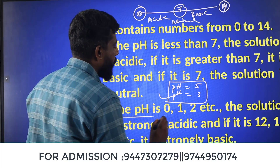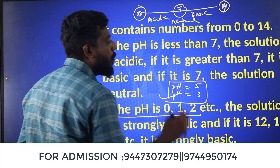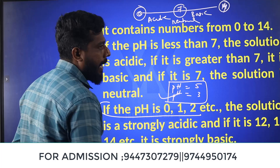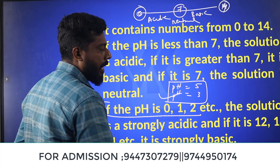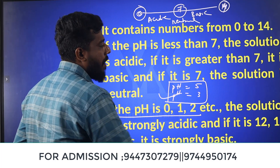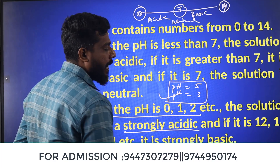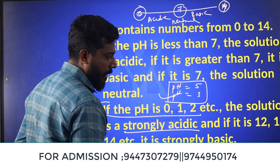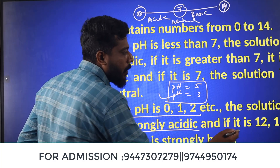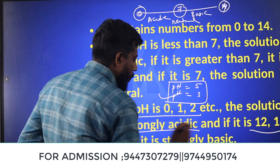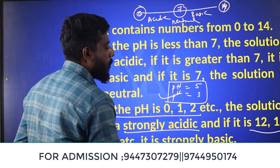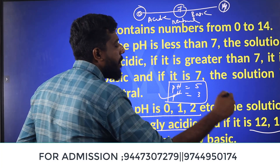If the pH is 0, 1, or 2, then it is strongly acidic. If the pH is 12, 13, or 14, it is strongly basic.